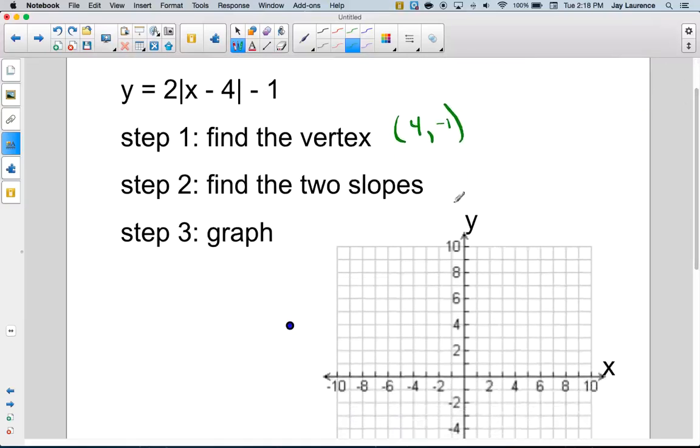There's going to be two slopes. Well, the first slope, it's just going to be a plain 2 over 1. The second slope is going to be 2 over negative 1. All right.